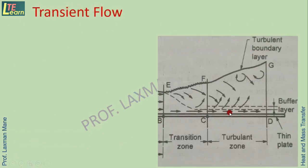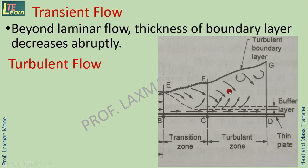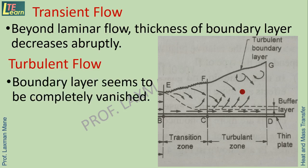In the transition zone (E to F), beyond the laminar region, the thickness of the boundary layer decreases. In the turbulent zone (F to G), where Reynolds number is greater than 5×10⁵, layers of fluid mix with each other — turbulence occurs — and the boundary layer appears to be completely vanished in this turbulent flow zone.